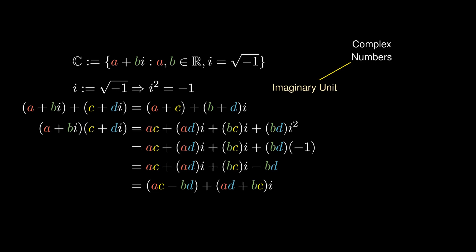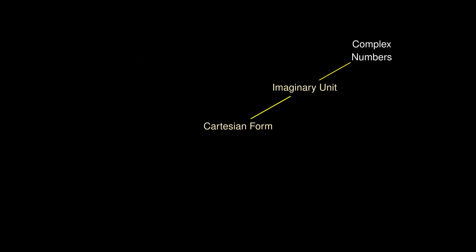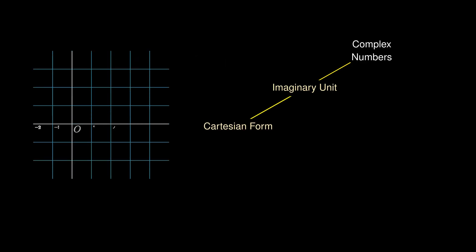The golden question to ask is: what do they represent visually? Numbers of this form are known as the Cartesian form, and we can represent them using points in a two-dimensional plane, very similar to what we have seen in vectors.